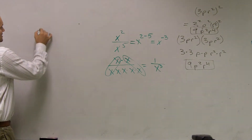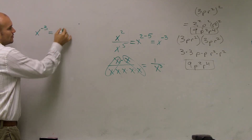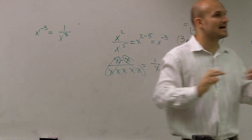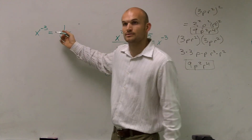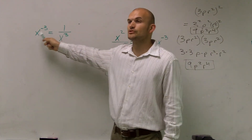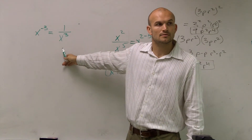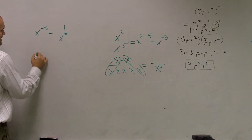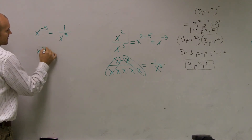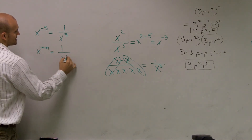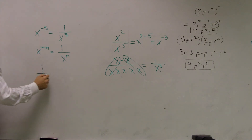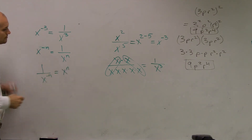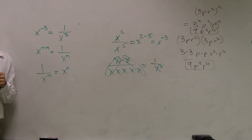So what I want to show you is: x to the negative third is equal to 1 over x cubed. If you get a negative exponent in your mathematics, the main important thing to make it positive is you can put it in the denominator. So the rule is: x to the negative n equals 1 over x to the n. And the same rule applies in reverse — if you have a negative exponent in the denominator, to make it positive, you put it in the numerator.